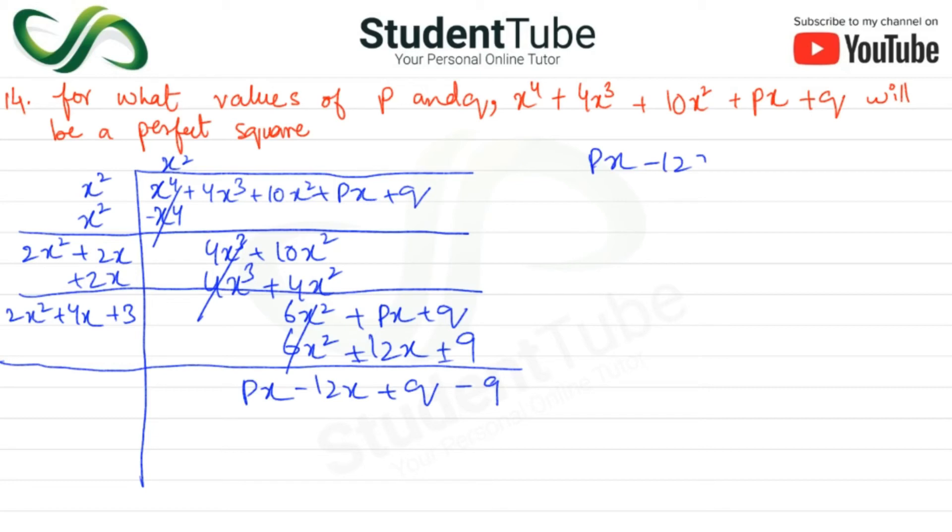PX - 12X + Q - 9 equal. Here we will have X common, and here P - 12, and here